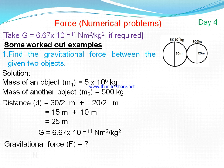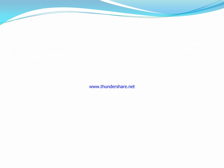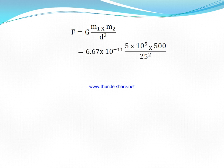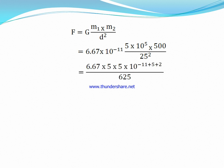We have to find the gravitational force F between them. Using the formula for gravitational force and putting in the values, we write the powers of 10 separately. For 500, we write it as 5 × 10². We place the numeric part on one side and add the powers of 10 together.